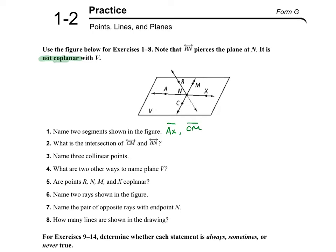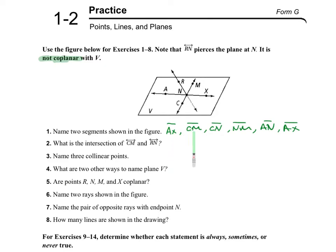I can rename all those segments in different ways. So for example, CN is a segment, and AN is another segment, and AX is another one. I can also rewrite those in reverse — XA and NC are the same as their originals.